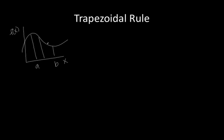We'll divide it into three different trapezoids, and we're going to assume that the width of each trapezoid is equal. Using the area of a trapezoid, we can approximate the definite integral between x equals a and x equals b through this formula: A equals one-half times the height of the first trapezoid times its two bases.